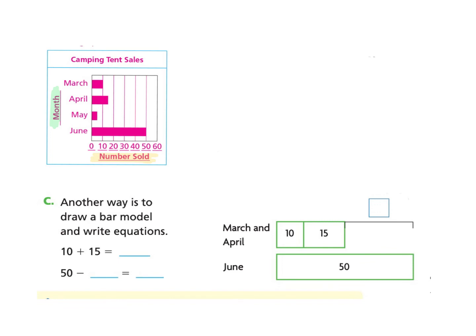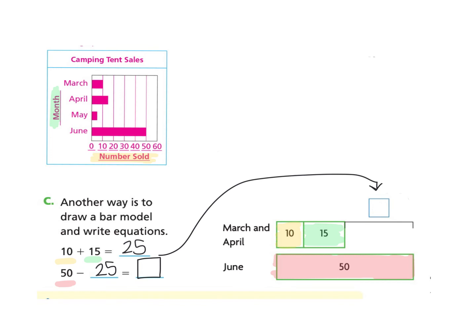Let's take a look at Part C. Another way is to draw a bar model and write equations. March is 10 and April is 15. Combined, March and April equal 25. We also know June is 50. Taking 50 minus 25 gives us the difference between June and March and April combined. You can pause and try that on your own — 50 take away 25 is 25.